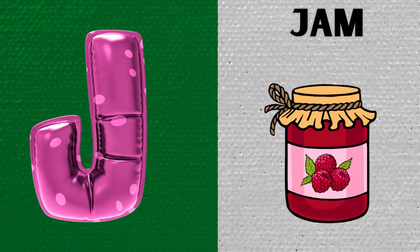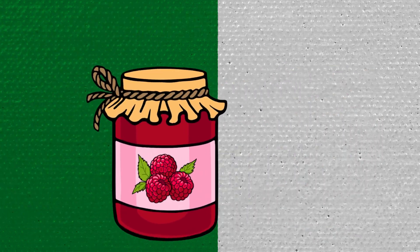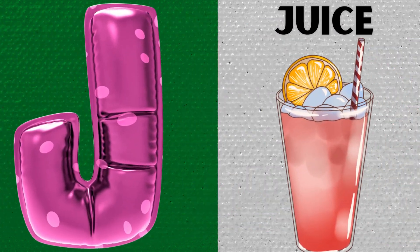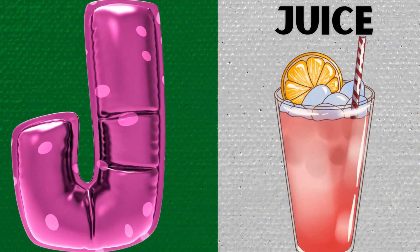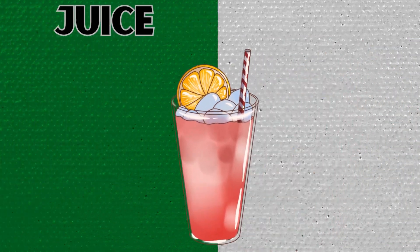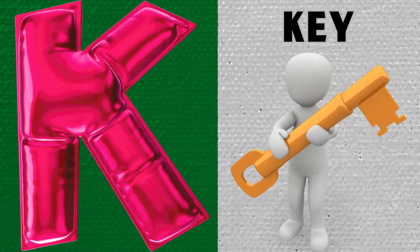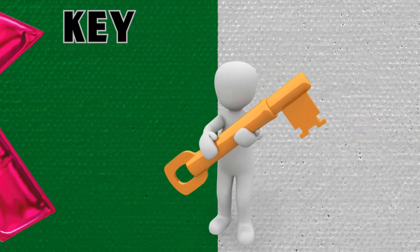J is for Jam. J, J, Jam. J is for Juice. J, J, Juice. K is for Key. K, K, Key.